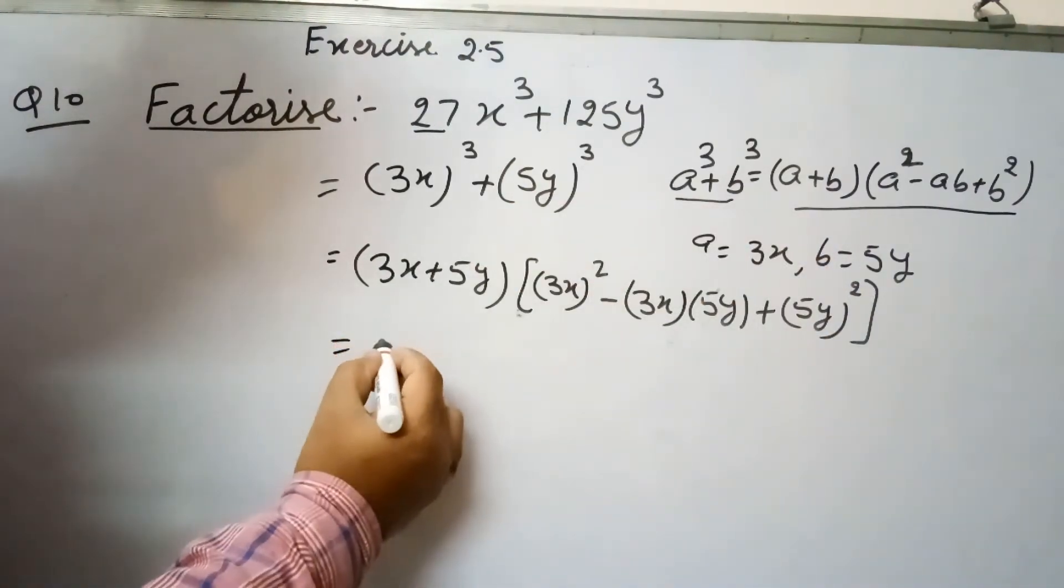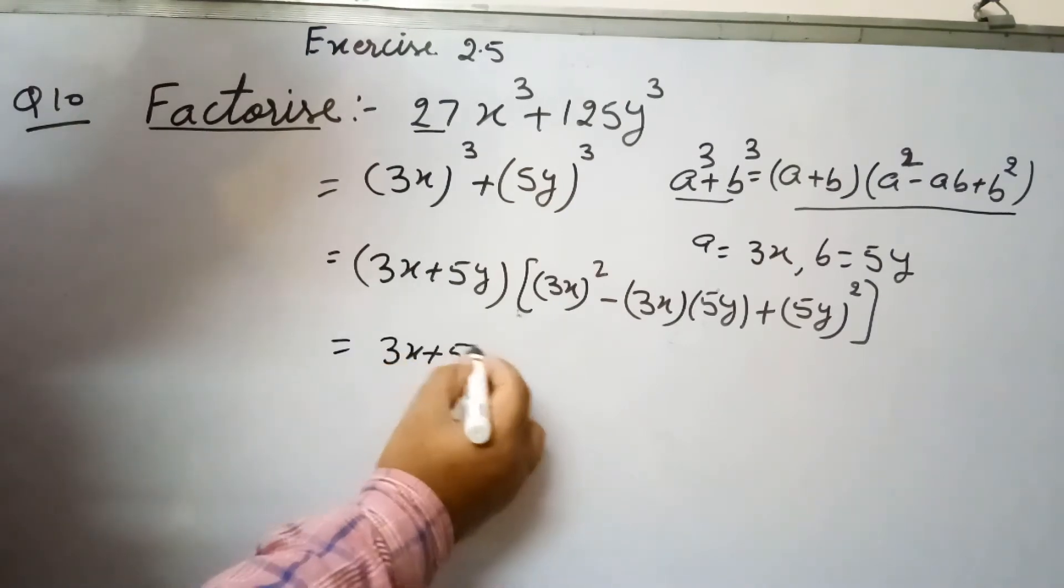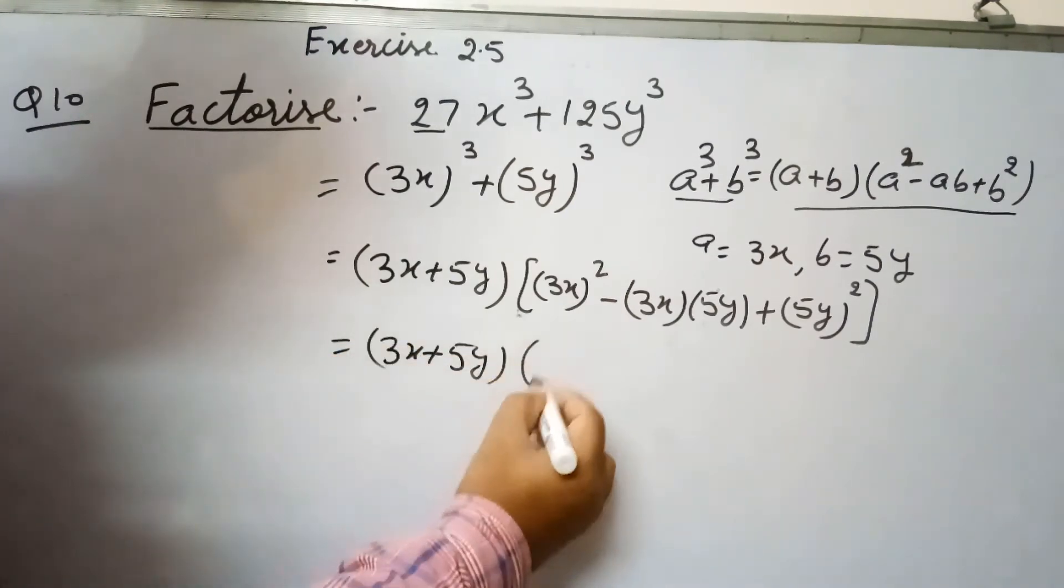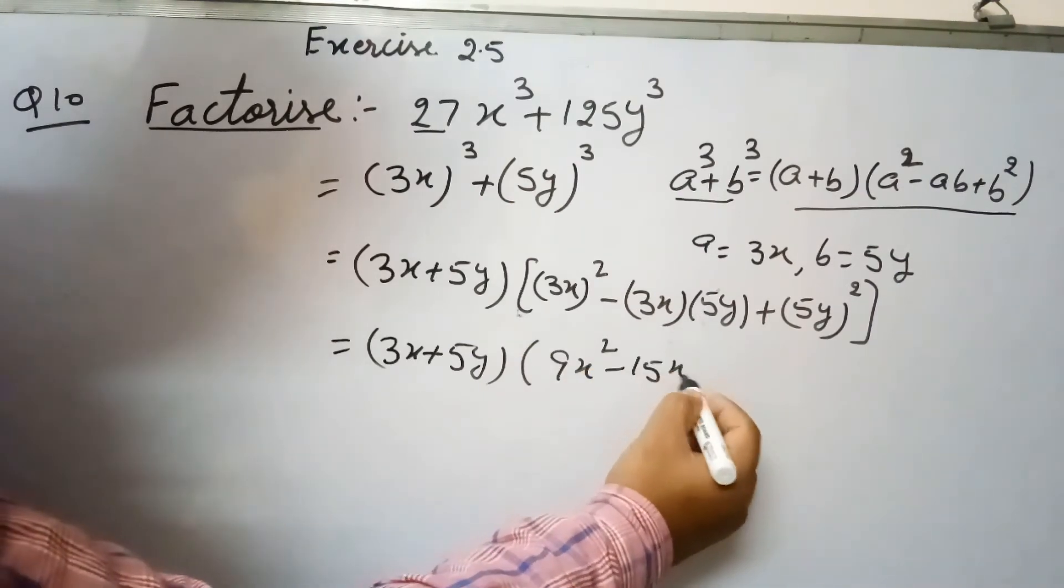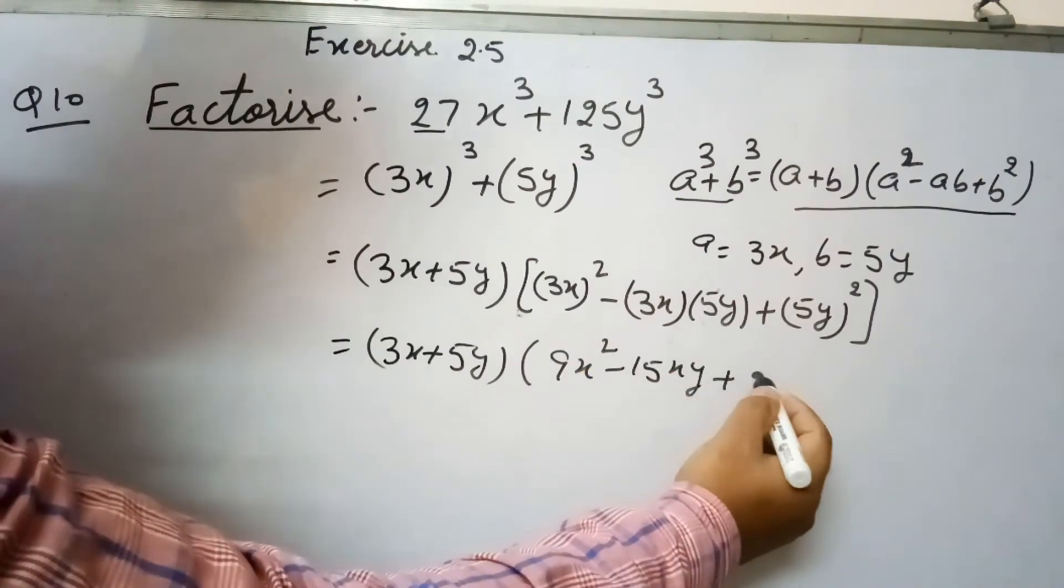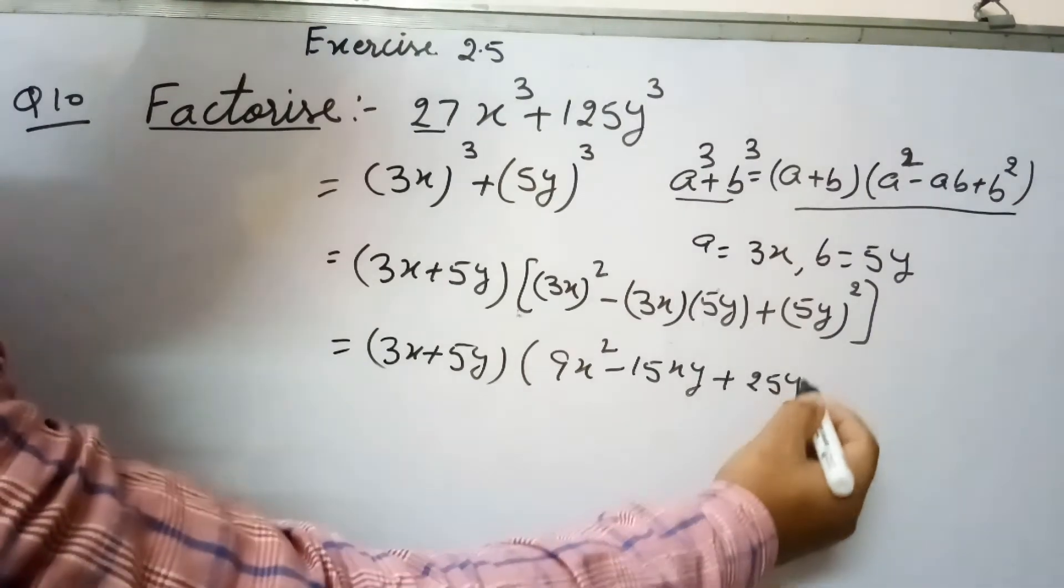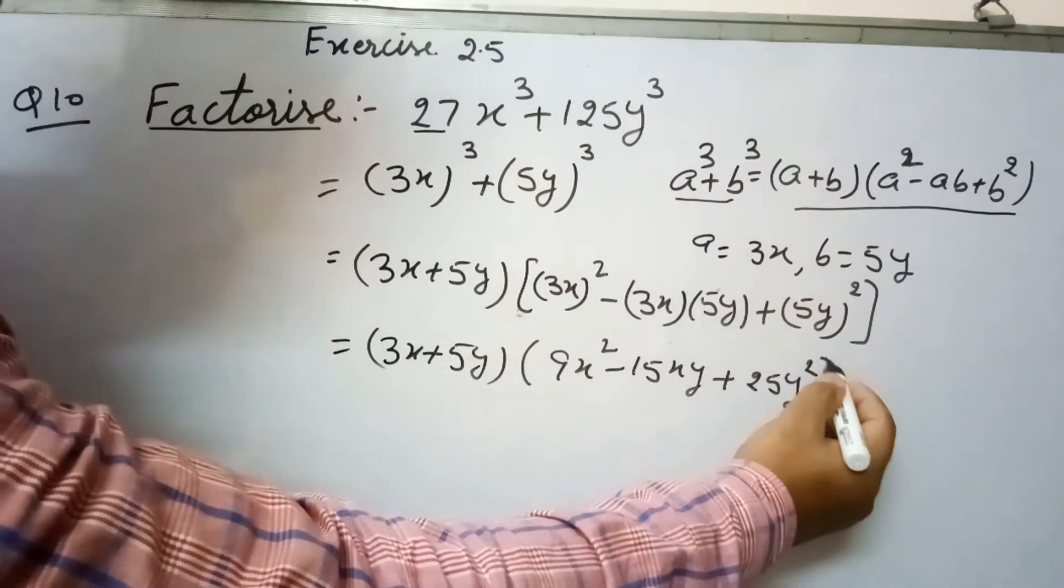Now the next step is to write this in simple form. So this square is 9x², product of this is -15xy, and square of 5y is 25y².